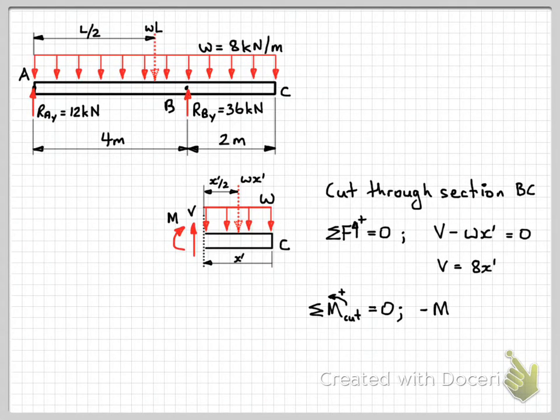We have the moment, internal moment, and note that it's negative because it's going clockwise, and we've defined positive as anti-clockwise in our equations of equilibrium. And then we have minus w x dash squared on 2.